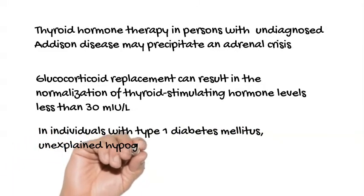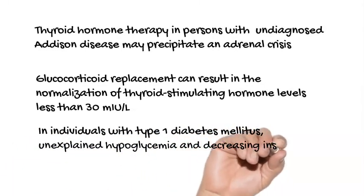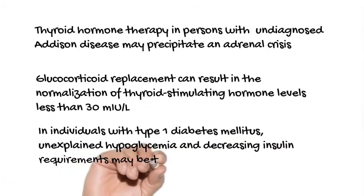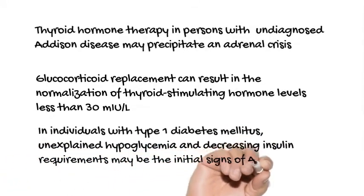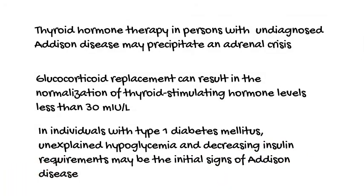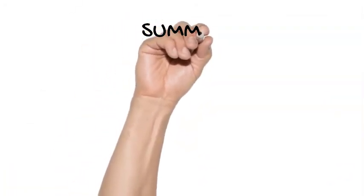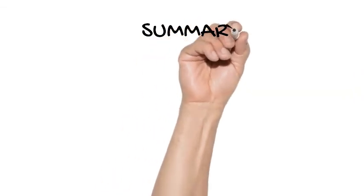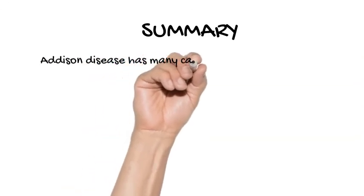In individuals with type 1 diabetes mellitus, unexplained hyperglycemia and decreasing insulin requirements may be the initial signs of Addison disease. In summary, primary adrenal insufficiency, or Addison disease, has many causes, the most common of which is autoimmune adrenalitis.